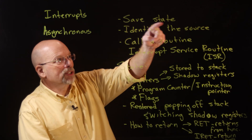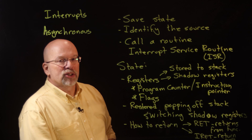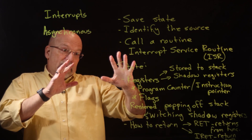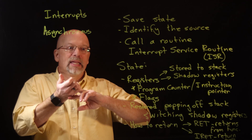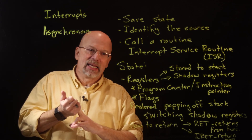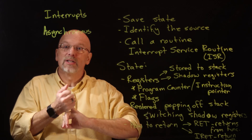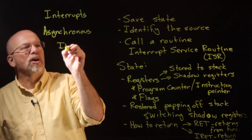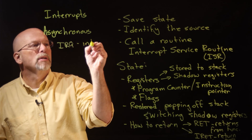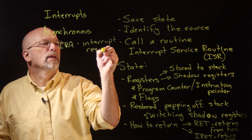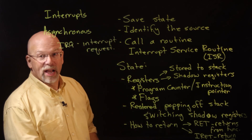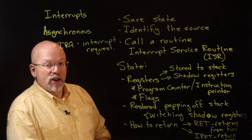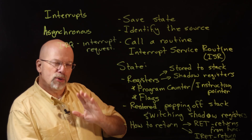Now let's talk about saving the state and identifying the source. This is done by the hardware, which has the ability to say it was the timer that interrupted me, or it was a reset, or it was the network interface card. In some architectures, this is called an IRQ, or interrupt request. Each separate piece of hardware will have its own IRQ, which identifies to the processor who is interrupting it — kind of like caller ID.